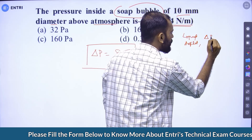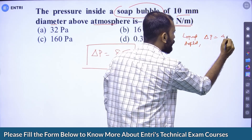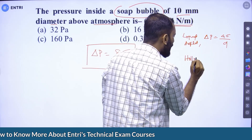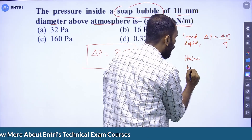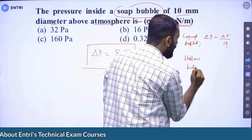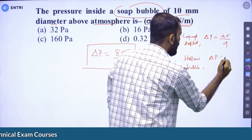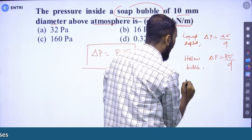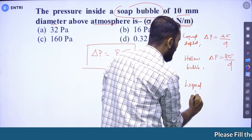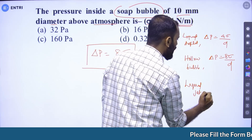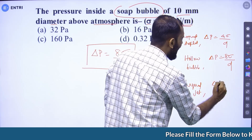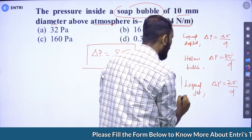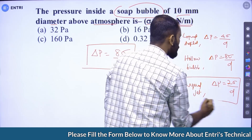There are three equations to know: for a liquid droplet, excess pressure = 4 sigma/D; for a hollow bubble, excess pressure = 8 sigma/D; and for a liquid jet, excess pressure = 2 sigma/D.